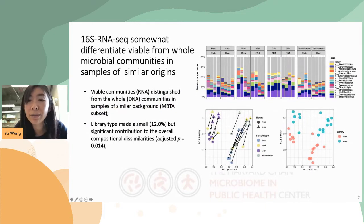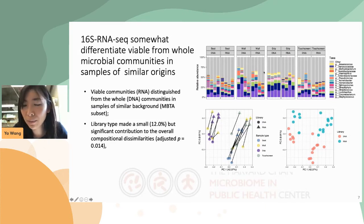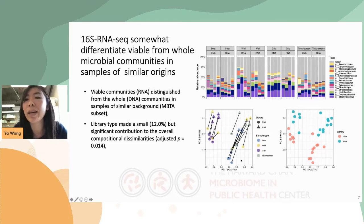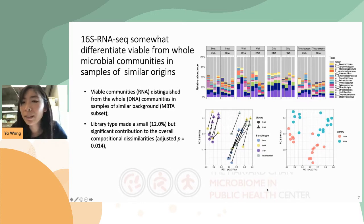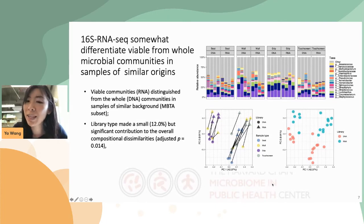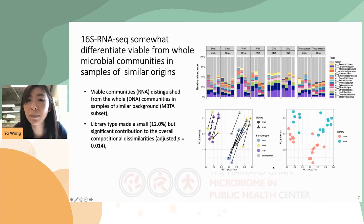The results were slightly different in samples of similar origins — from the subway systems. The RNA versus DNA communities still look alike in the stack bar plot, but samples were differentiated both by environment type and by library type in the PCoA plot. The library type makes a small yet significant contribution to the overall compositional dissimilarities, suggesting that 16S RNA-seq somewhat differentiated viable from whole microbial communities in samples of similar background.